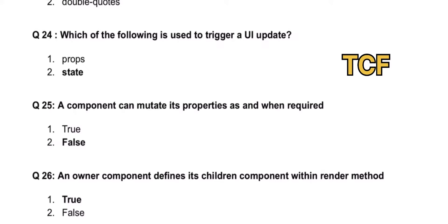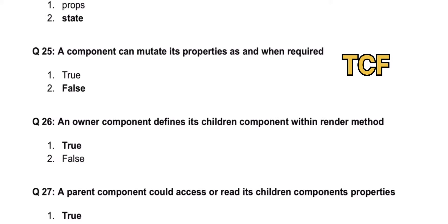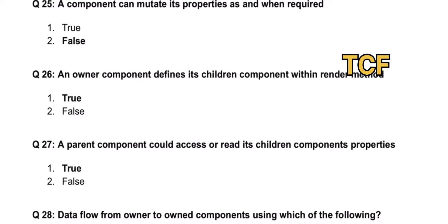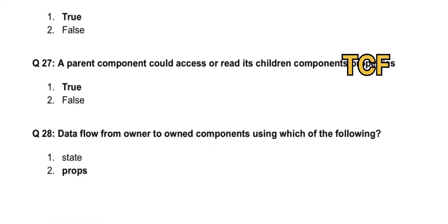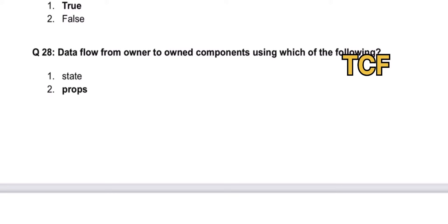A component can mutate its properties as and when required - that is false. Owner component defines its children components within render method - that is true. A parent component could access or read its children components properties - that is true.